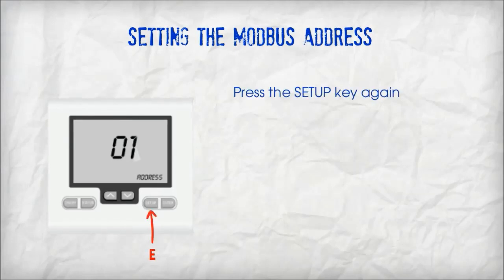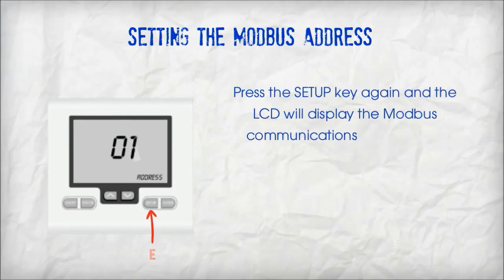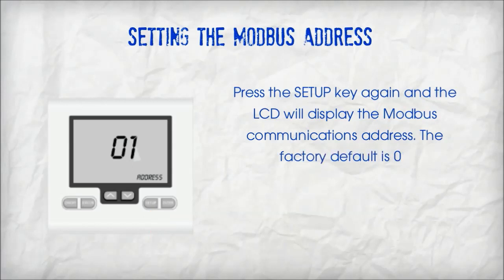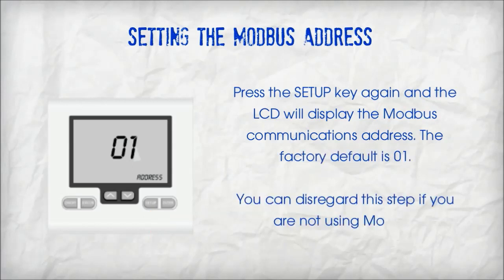Press the setup key again and the LCD will display the Modbus communications address. The factory default is 01. You can disregard this step if you are not using Modbus communications.